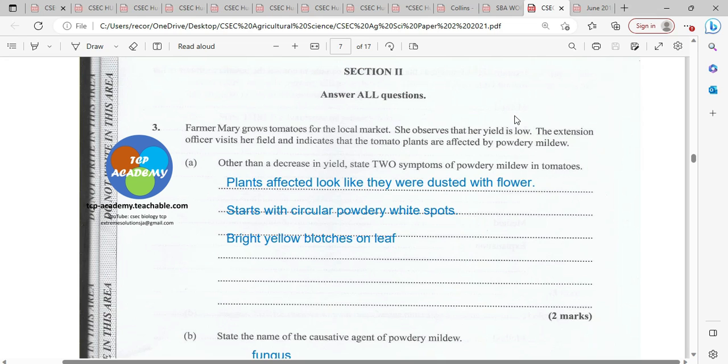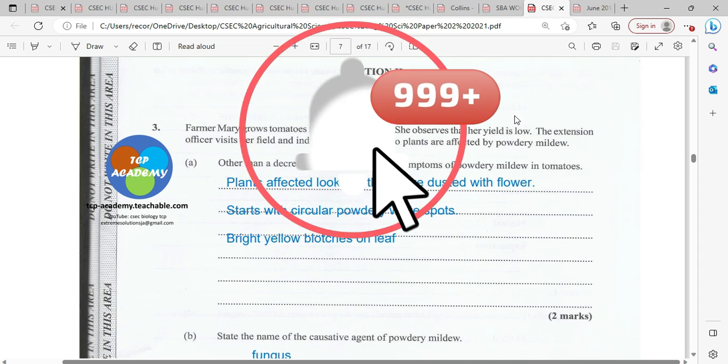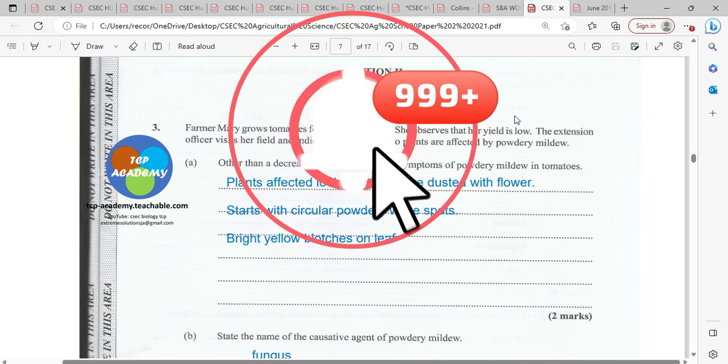Farmer Mary grows tomatoes for the local market. She observed that the yield is now low. The extension officer visits the field and indicates that the tomato plants are affected by powdery mildew. Other than a decrease in yield, state four symptoms of powdery mildew in tomatoes.